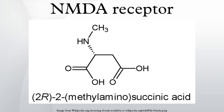Variants: there are eight variants of the NR1 subunit produced by alternative splicing of GRIN1 — NR1-1A, NR1-1B (NR1-1A is the most abundantly expressed form), NR1-2A, NR1-2B, NR1-3A, NR1-3B, NR1-4A, and NR1-4B.